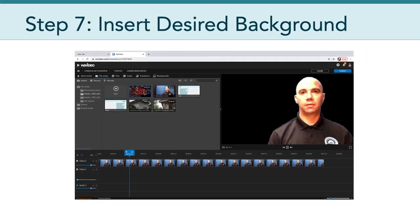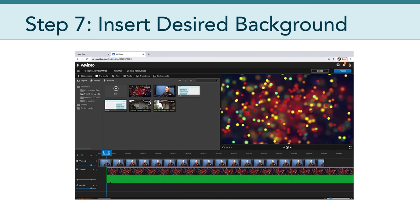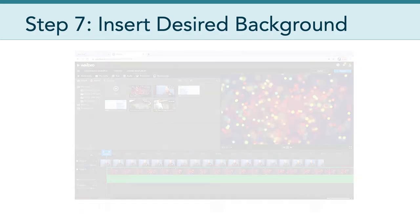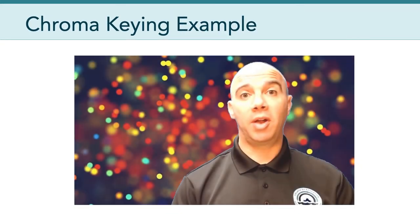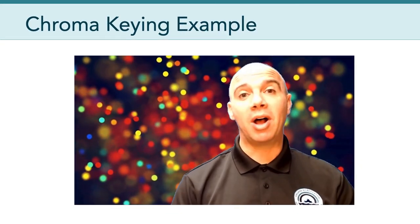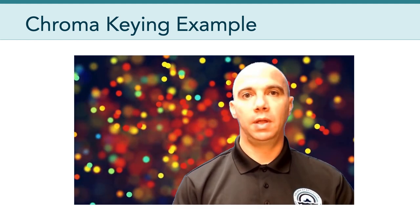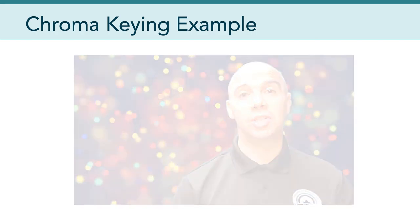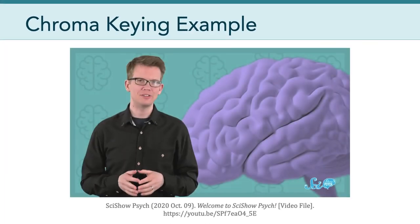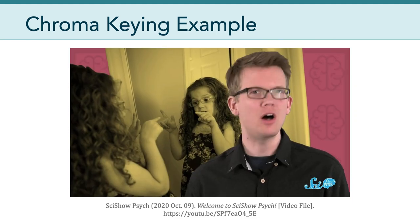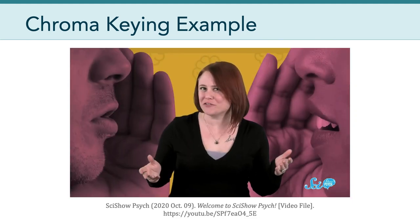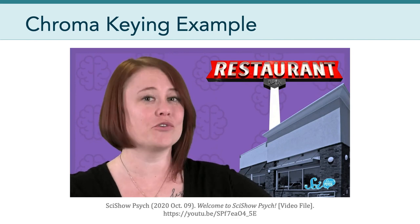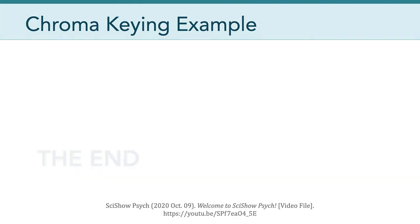Ultimately, what you want to do is insert your desired background. Importantly, this track should go underneath the keyed footage. And here is an example of the result, where you can see me green screened or blue screened on top of a dynamic background. And just to give you a little bit more of an idea of what's possible professionally, here's a 2020 video from SciShow Psych — you can see there are all kinds of possibilities when it comes to using chroma keying.